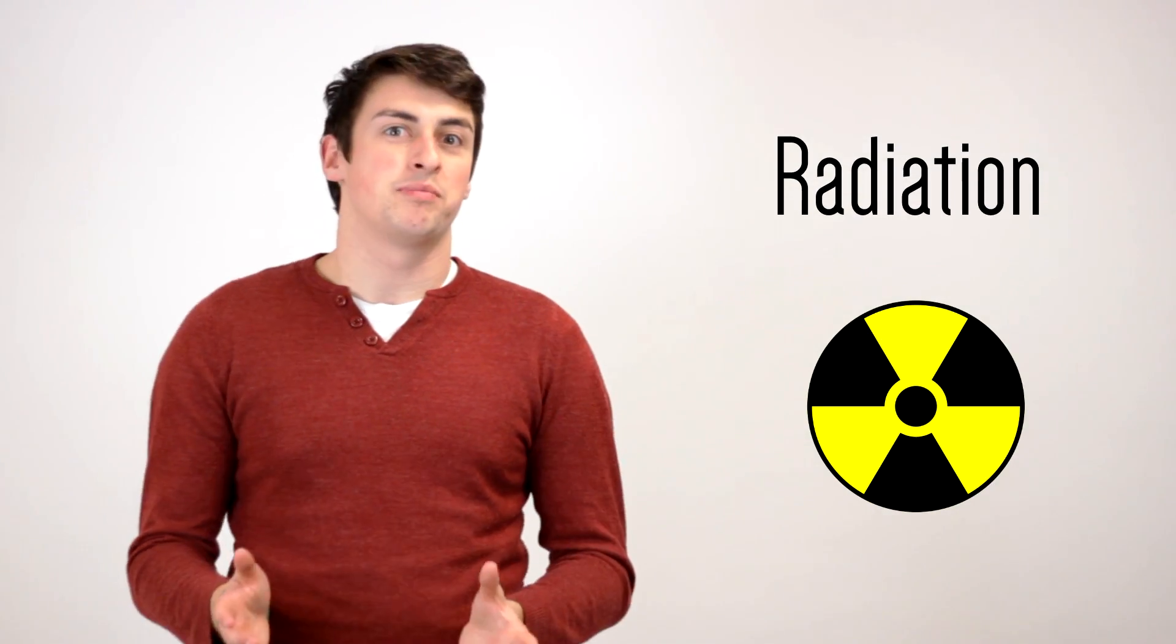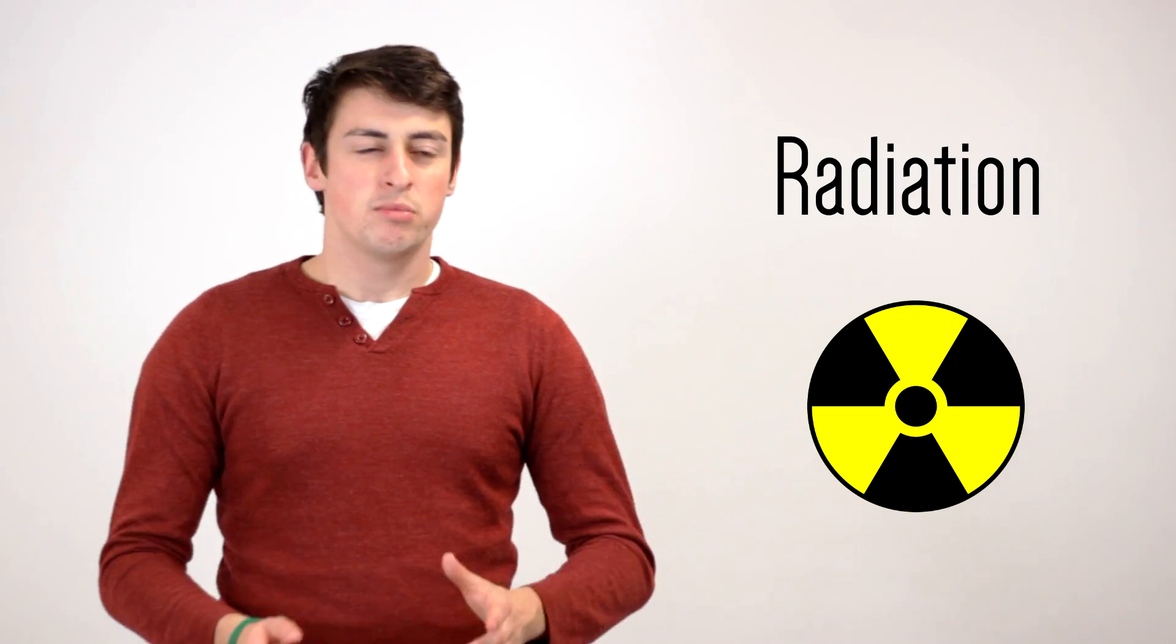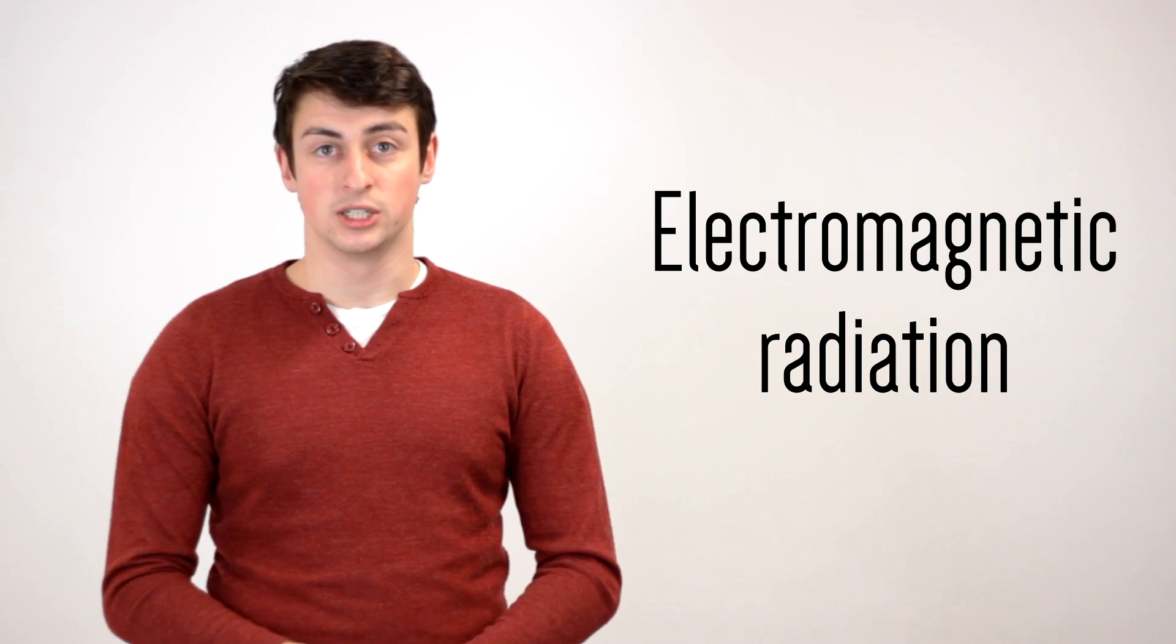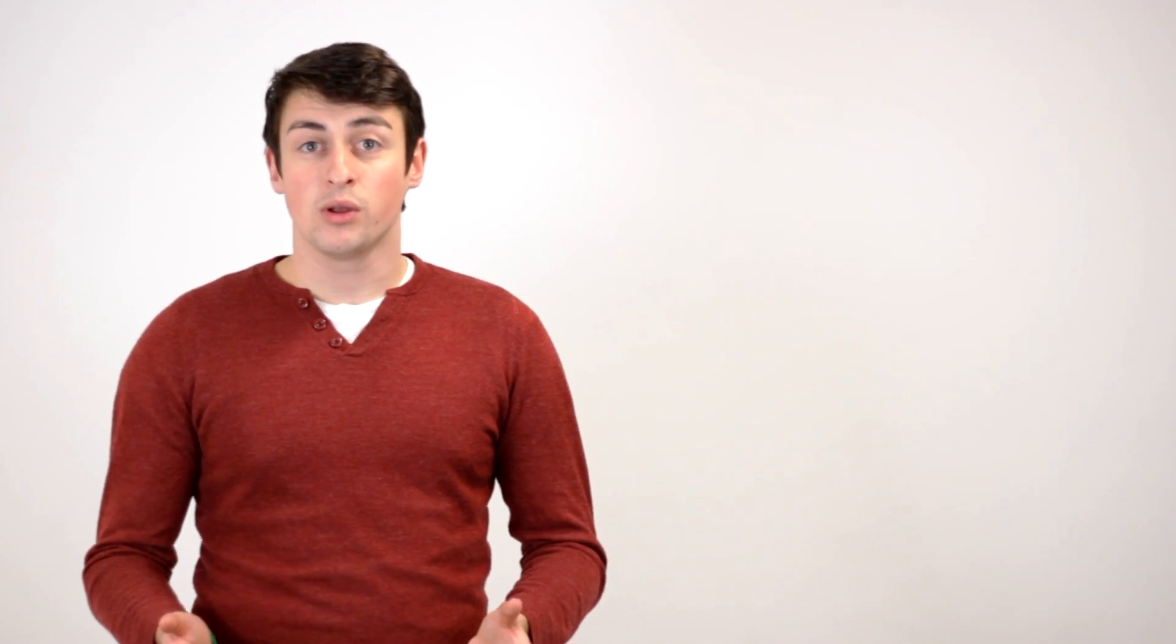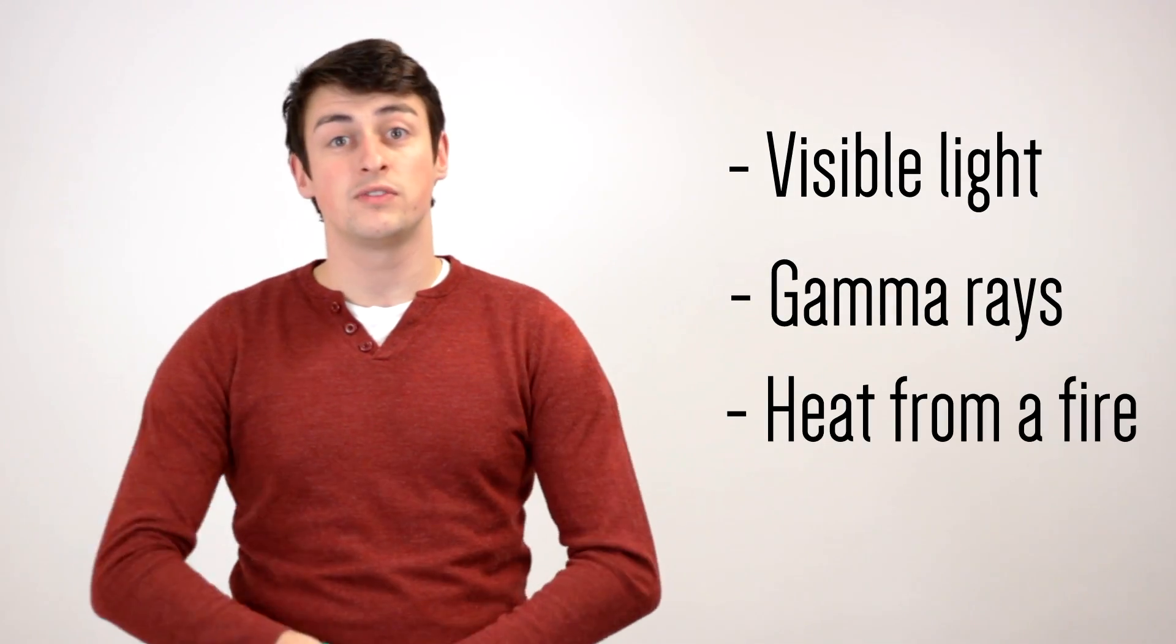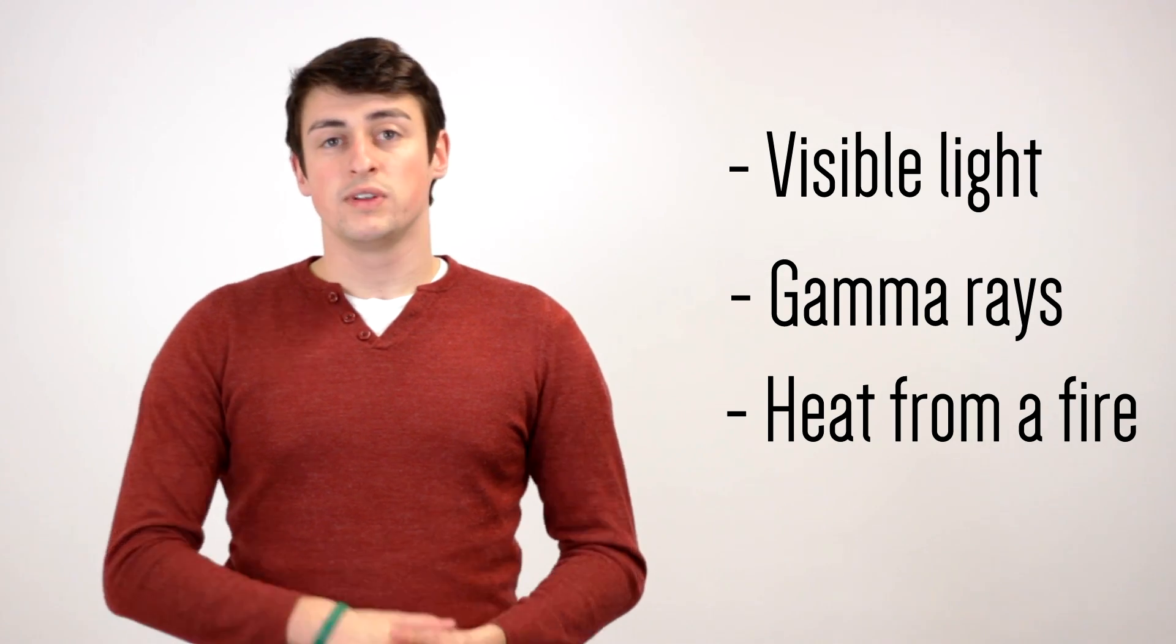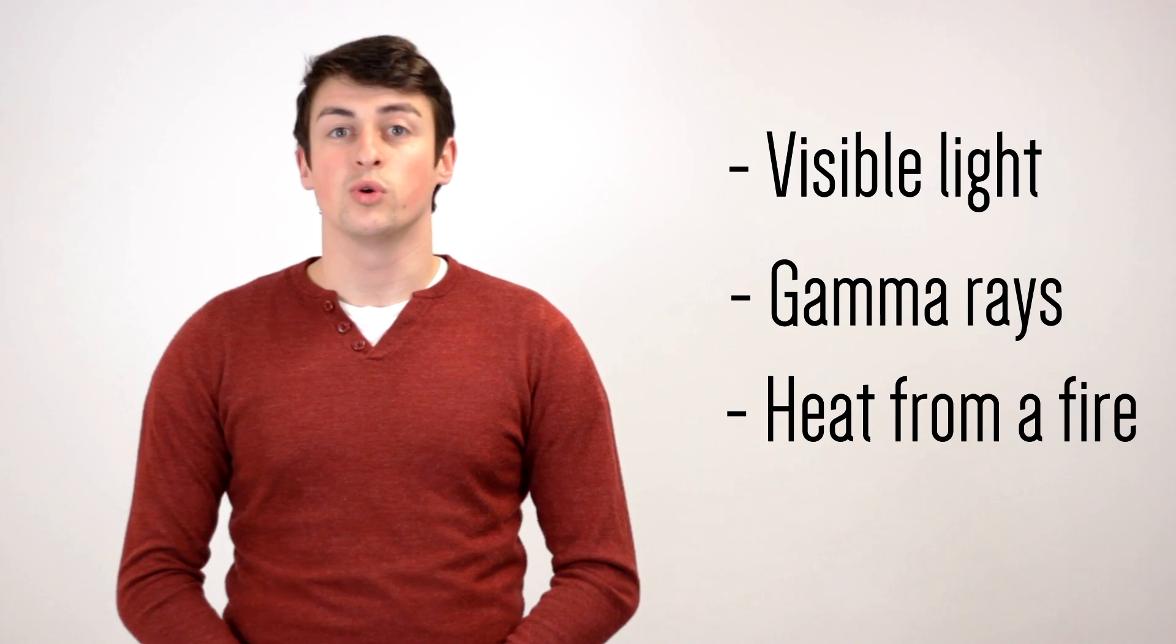Now when most people think of radiation, they think of alpha, beta particles, gamma particles, all these really nasty things that are given off by radioactive sources. But what physics means in a general physics context is rather different. When we talk about radiation, what we really mean is electromagnetic radiation, or EM radiation. Now, visible light is an example of EM radiation, as are the gamma rays that I talked about earlier, and also the heat coming off of a fire. They're all forms of electromagnetic radiation, but they're different because they have different wavelengths.